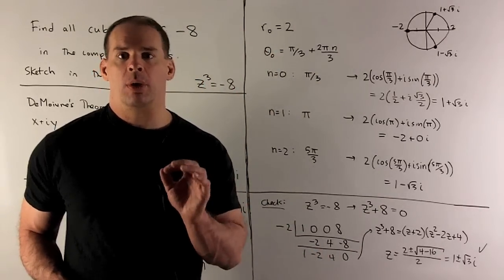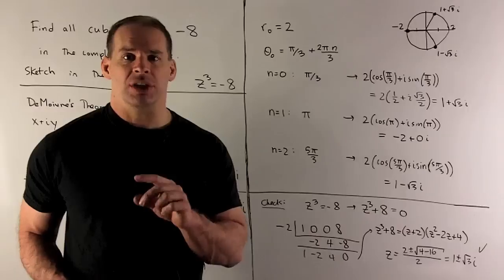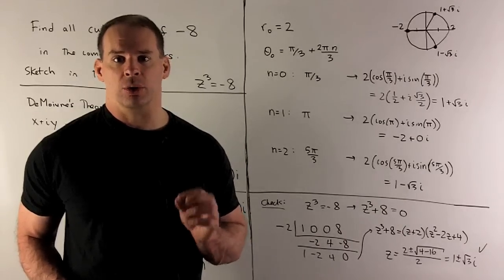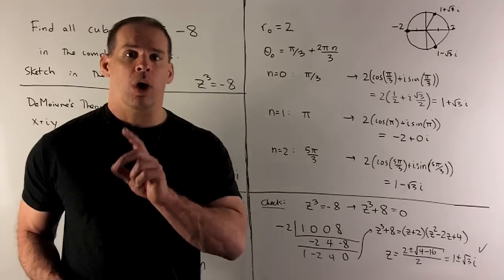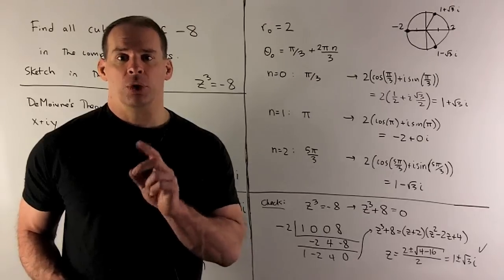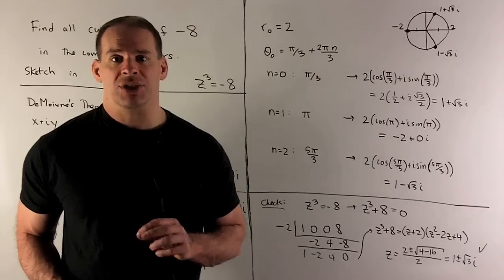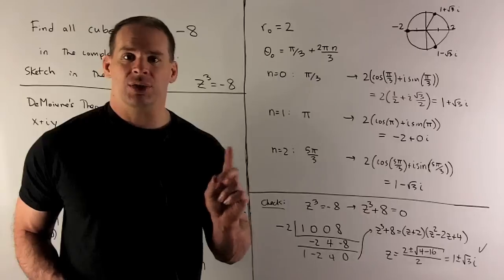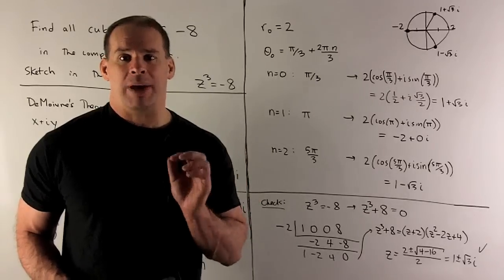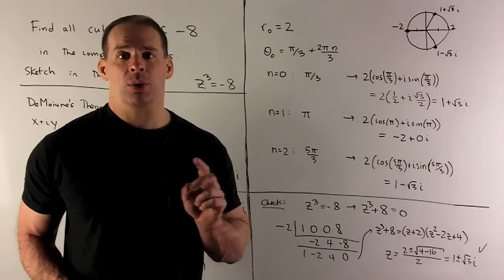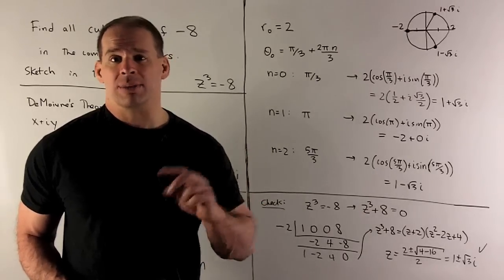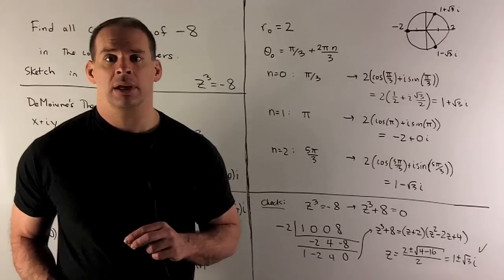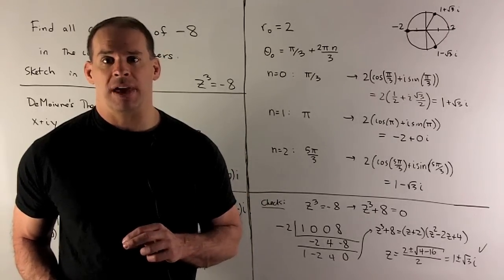Another approach: we factor z cubed plus 8 and set it equal to 0. We get one root for free — the real cube root of minus 8 is minus 2. So we divide z cubed plus 8 by z plus 2, and the result will be a quadratic that we can solve with the quadratic formula. To do the division, we use synthetic division.